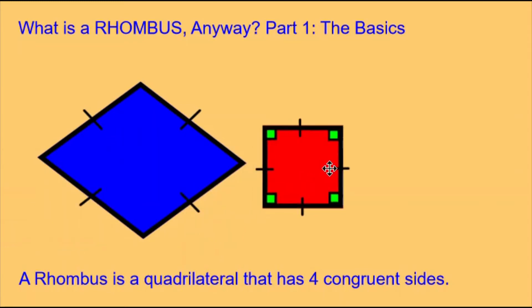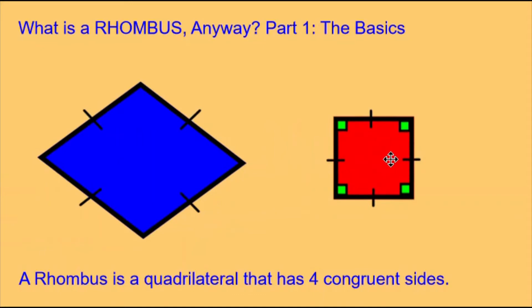You might ask: what about a square? Is a square a rhombus? And the answer is yes. Because a square has four congruent sides, all squares are also rhombuses.